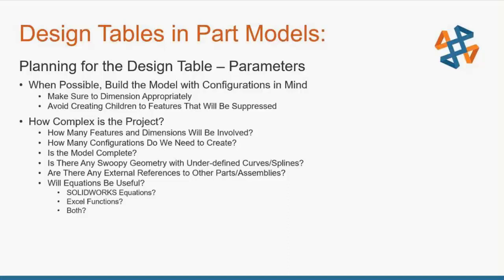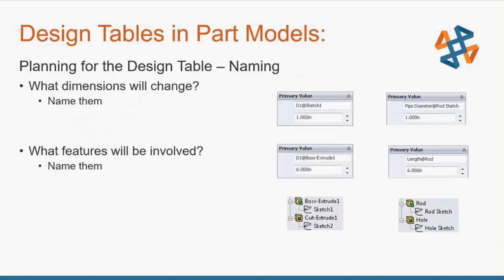For organizational purposes, naming your sketches and features is always a good idea. If not, you'll be stuck trying to remember what Sketch 7 is or what Cut Extrude 3 is, as opposed to a dimension named Pipe Diameter or a feature named Rod. You can rename sketches and features a few different ways — either doing a slow left click, selecting on it and hitting F2, or double-clicking to bring up the modify window where you can rename your sketches or dimension names there.